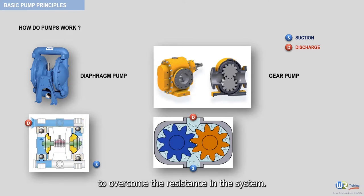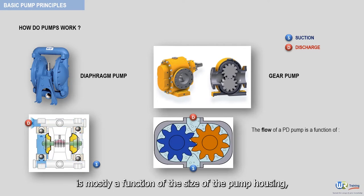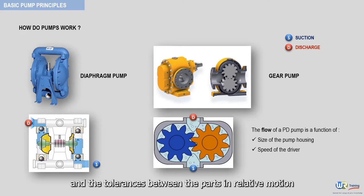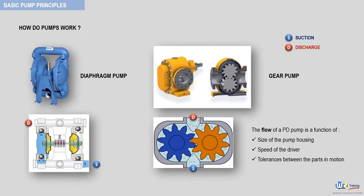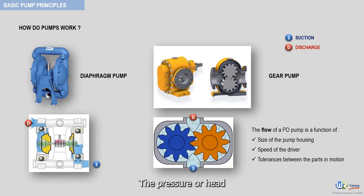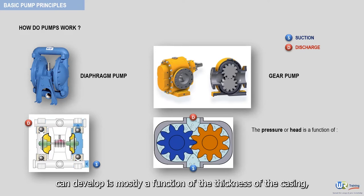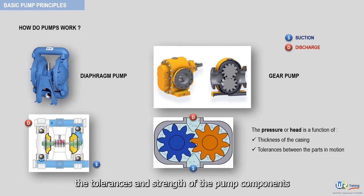The fluid is expelled into the discharge piping, prepared to overcome the resistance in the system. The flow that a positive displacement pump can generate is mostly a function of the size of the pump housing, the speed of the motor, and the tolerances between the parts in relative motion. The pressure or head that a positive displacement pump can develop is mostly a function of the thickness of the casing, the tolerances, and strength of the pump components.